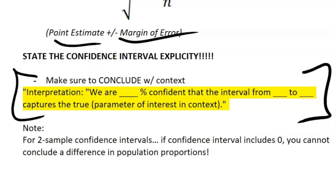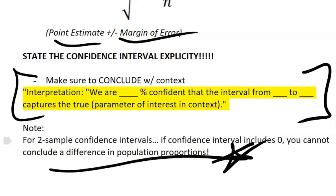An important note for two-sample confidence intervals: if the interval contains the value of zero, you cannot conclude a difference in population proportion. This comes up in follow-up FRQ questions — you'll get a result like negative one to 3.2, and the question asks if you can conclude a difference. Since it includes zero, you cannot conclude a difference, because there could simply be no difference.